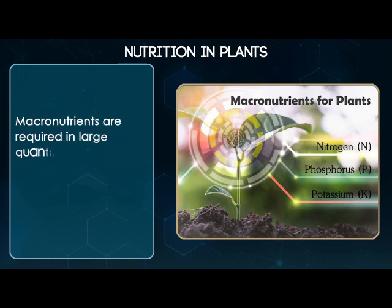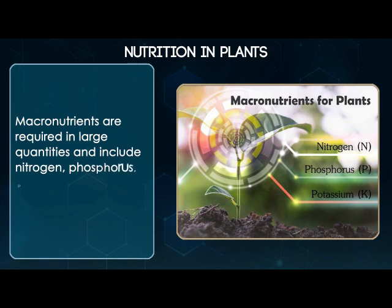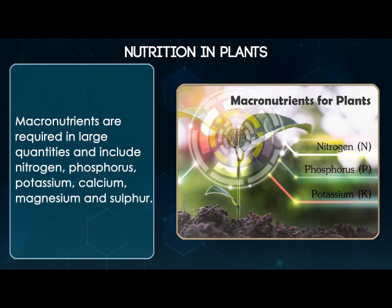Macronutrients are required in large quantities and include Nitrogen, Phosphorus, Potassium, Calcium, Magnesium, and Sulphur.